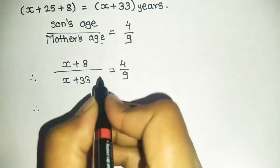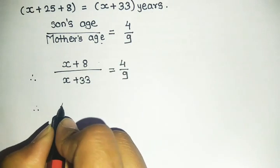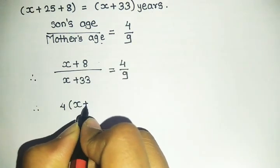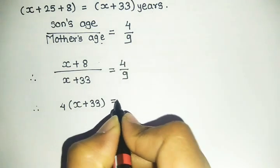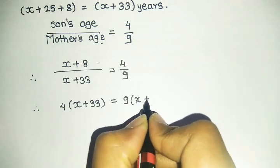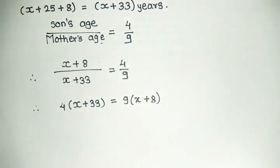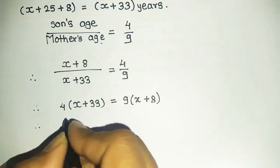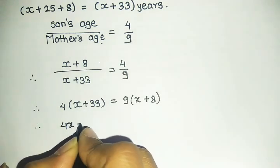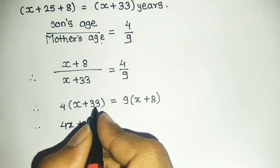How do we solve this? We use cross multiplication. 4 into x plus 33 equals 9 into x plus 8. Cross multiplying: 4 into x is 4x, 4 into 33 is 132, equals 9 into x is 9x, 9 into 8 is 72.